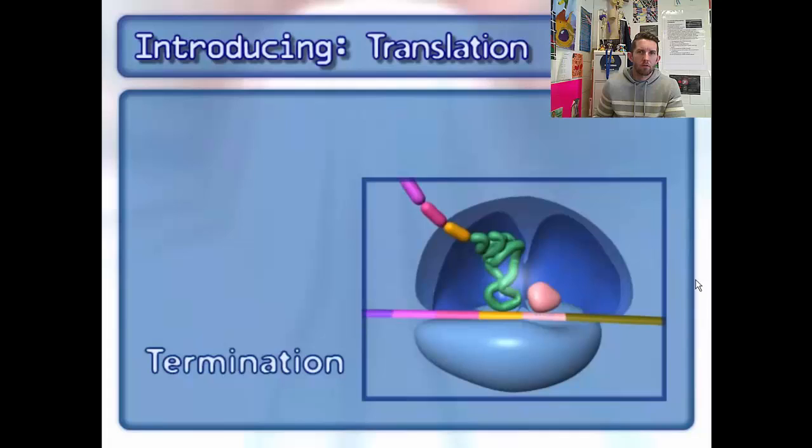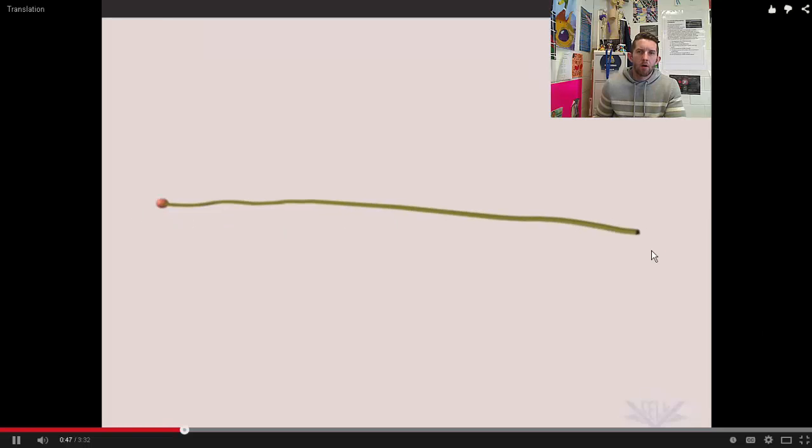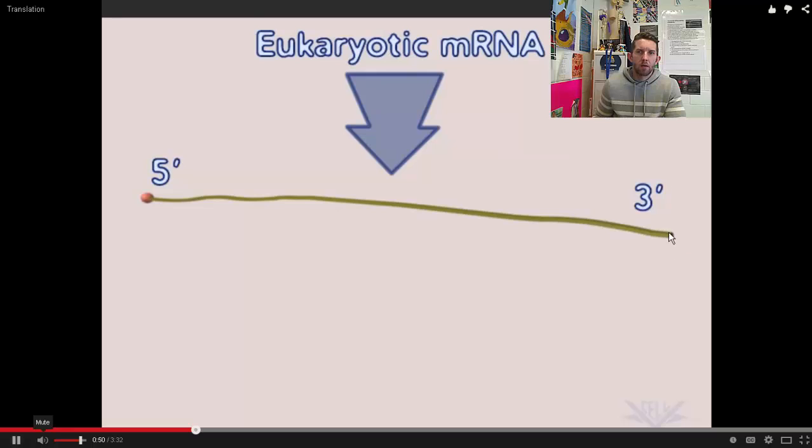Let's walk through it. This is our mRNA strand. The 3' end, the 5' end. Here's our modified guanine at the 5' cap, and our poly-A tail is going to be in the 3' end of our mature mRNA.